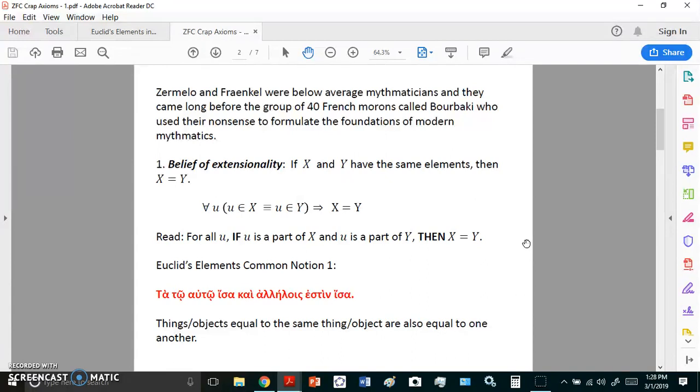Over 2300 years ago in that famous book called the Elements we have something called the common notion. The first one says things equal to the same thing are also equal to one another. That simply means that objects equal to the same thing are also equal to one another. It's pretty simple.